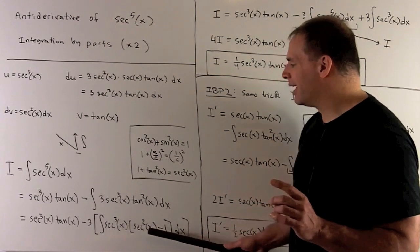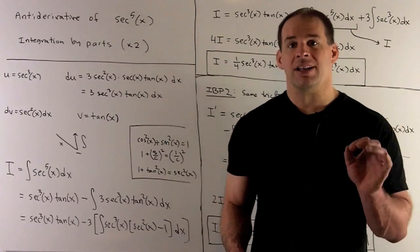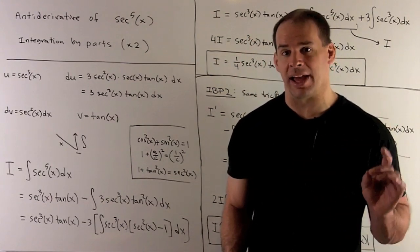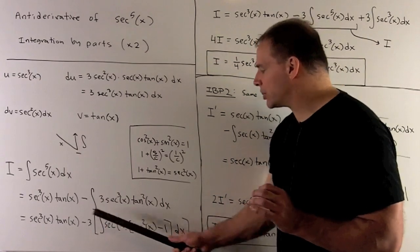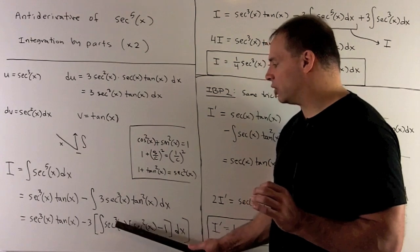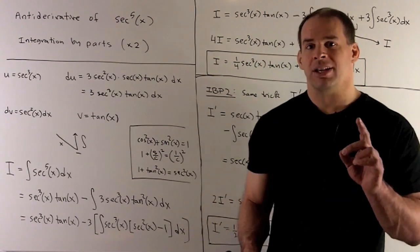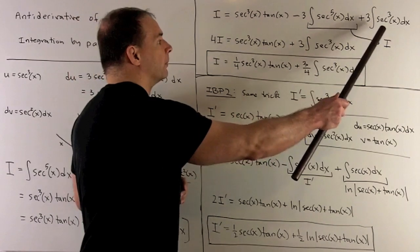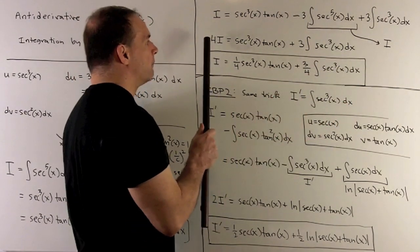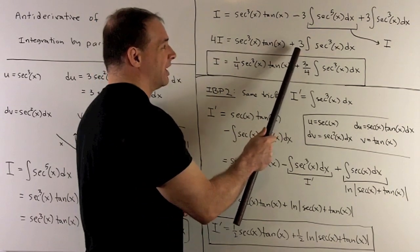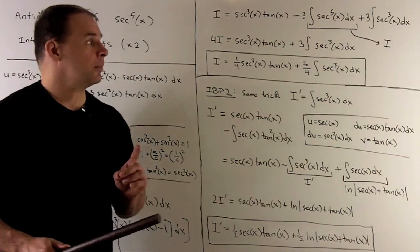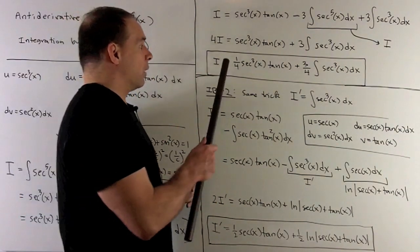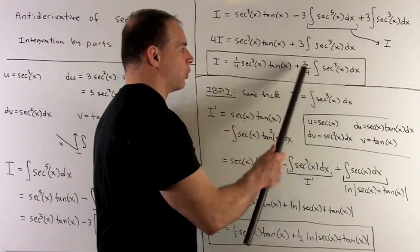For the first term we get minus three times the antiderivative of secant to the fifth power, which is just minus three i — as promised, i appears on the right-hand side. For the second term we have minus three times minus one times the antiderivative of secant cubed, showing the second feature: we've pushed secant to the fifth down to secant cubed. Collecting everything and moving minus three i to the other side gives four i equals secant cubed tangent x plus three times the integral of secant cubed, which we work out next. So the integral of secant to the fifth equals one-fourth secant cubed tan x plus three-fourths times that remaining integral.